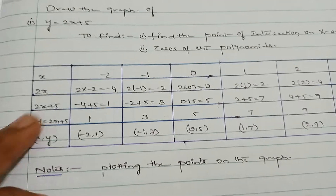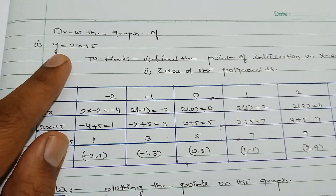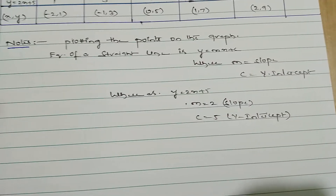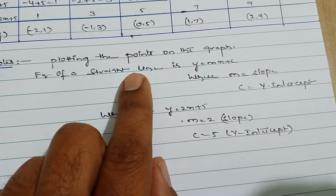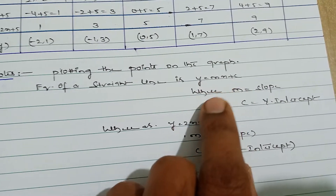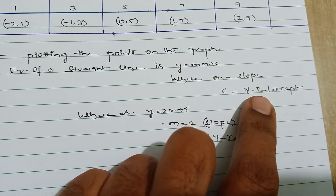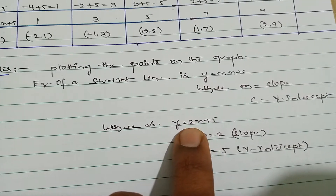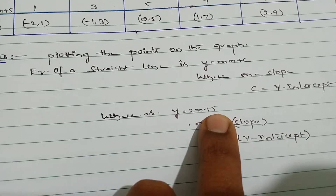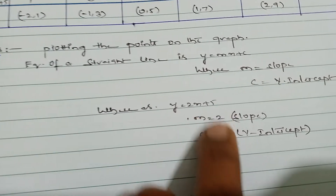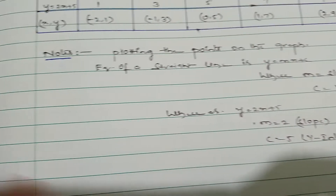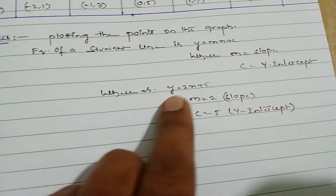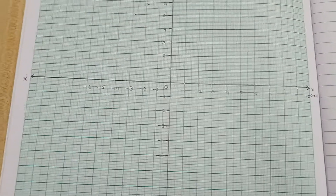Before plotting points on the graph paper, you have to make a tabular form. The given polynomial is y = 2x + 5, which is in the form y = mx + c, where m is the slope and c is the y-intercept. You will understand slope and y-intercept better by drawing and observing the graph.